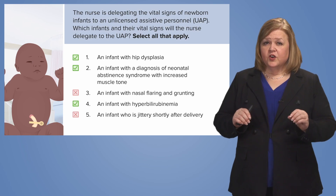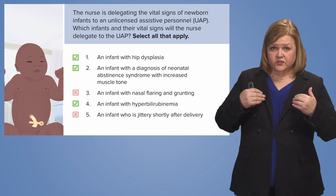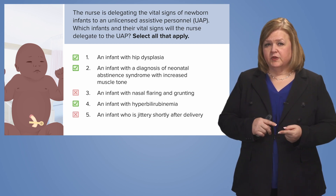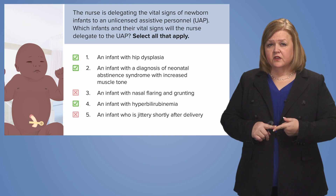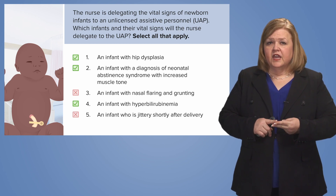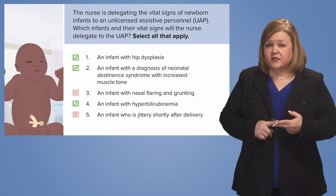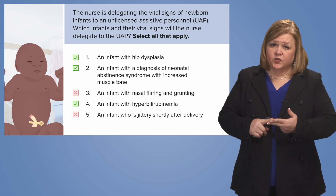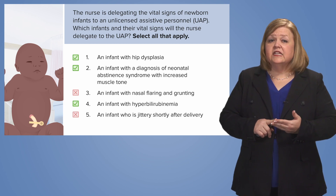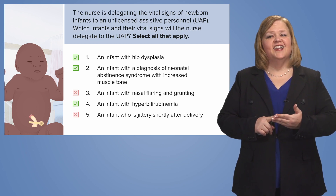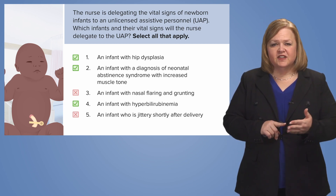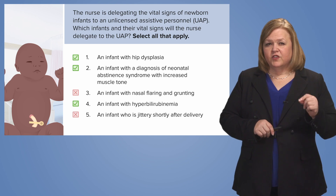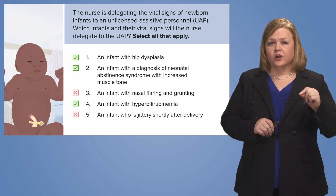Number five we already threw out. So the correct answers — who I would delegate to a UAP as a nurse — are the stable patients: number one, an infant with hip dysplasia (orthopedic issue); number two, an infant with NAS, neonatal abstinence syndrome (miserable but not hemodynamically unstable); and number four, an infant with hyperbilirubinemia (stable). Numbers three and five I would not delegate to a UAP — those two clients need to be assessed directly by an RN.